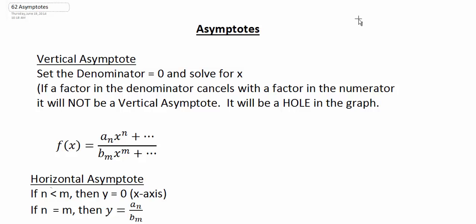This video is going to look at our different types of asymptotes. We're going to go back over our vertical asymptote that we talked about, and then we're going to look at horizontal and slant asymptotes.